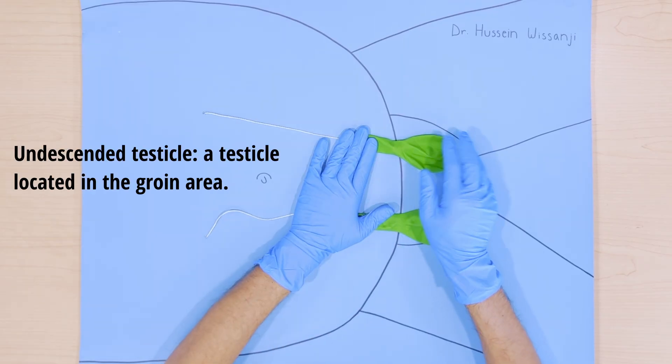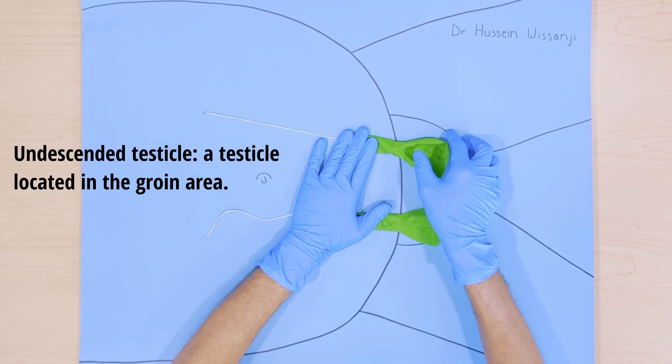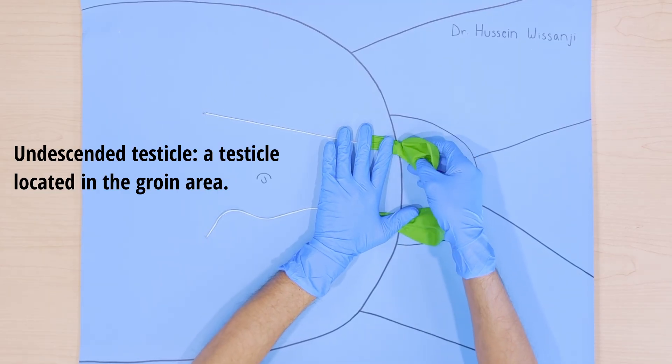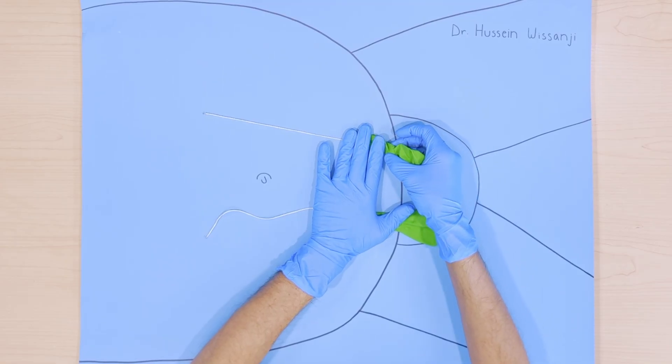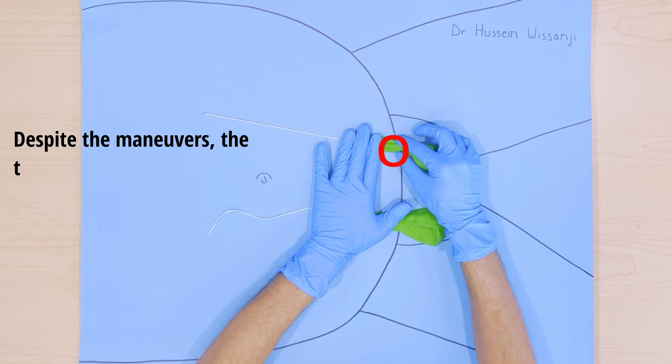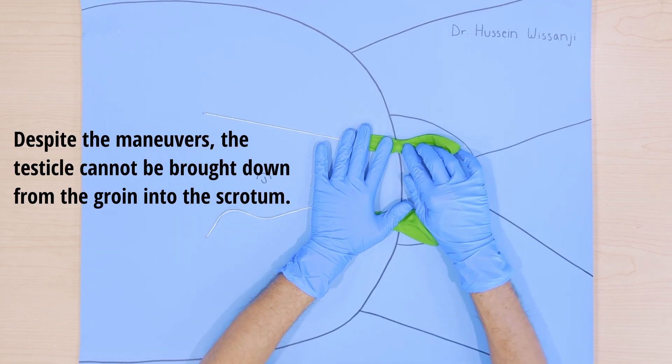Now let's go to the other side when we'll palpate an undescended testicle located in the inguinal region. As you can see, the scrotum is empty and I can palpate with my right hand the testicle in the inguinal canal. With my left hand, I'm trying to sweep the testicle into the scrotum but I'm not able to do so. And despite palpation or retraction, the testicle stays in the inguinal canal. So that's the definition of an undescended testicle.